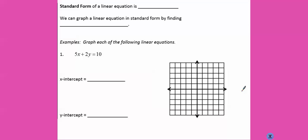So standard form of a linear equation is ax plus by equals c. And a, b, and c are all numbers. You'll see numbers in the place of them.